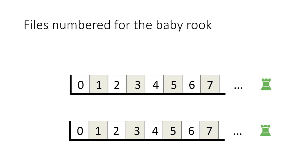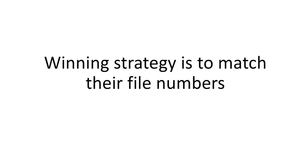Numbering the columns makes it convenient to record a game which includes one or more baby rooks. When playing the sum of two baby rooks, the winning strategy is to match their file numbers.